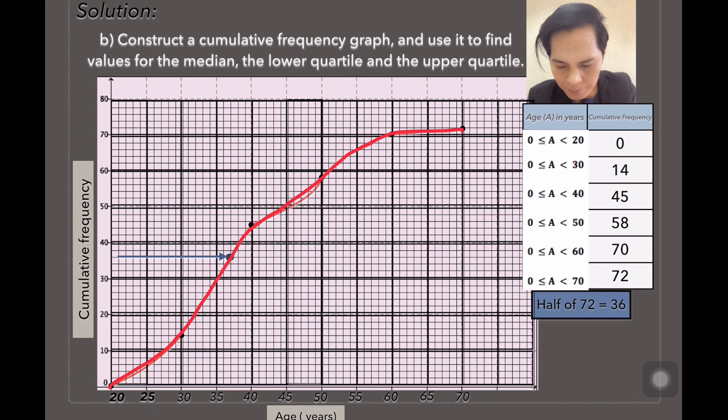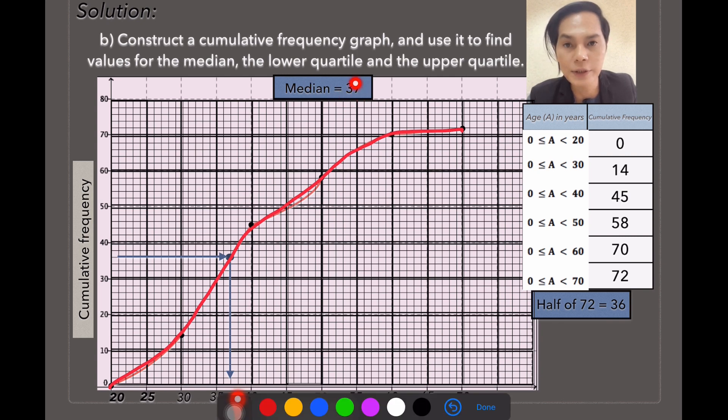36 in the cumulative frequency, and then the corresponding value in the x-axis in age in years, what is that? That is 37. In other words, the median is 37.